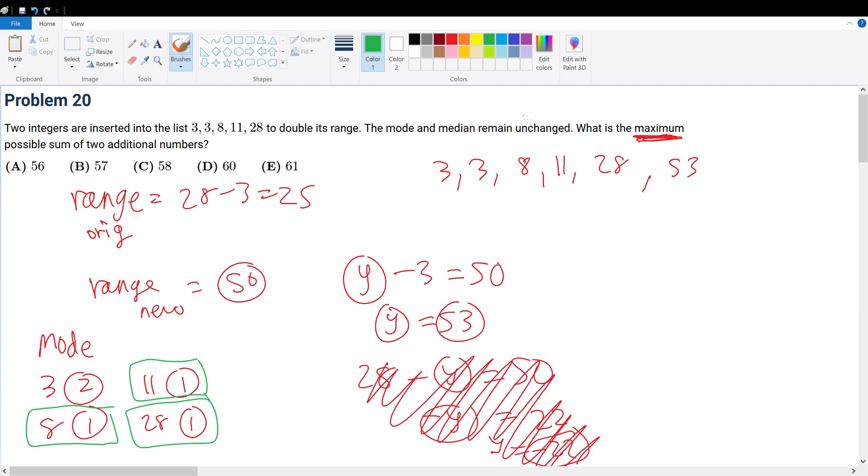The median also remains unchanged. Well, the median is the middle term, and the term here is 8 for the original series, just from visual inspection. So if we added a term, let's just play around with it. 3, 3, 8, 11, 28, and then we have 53. What is the median for the series for now?